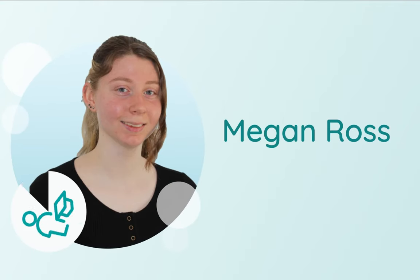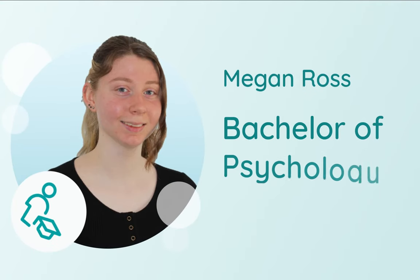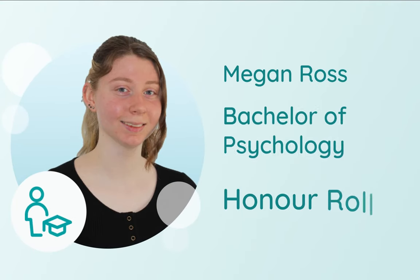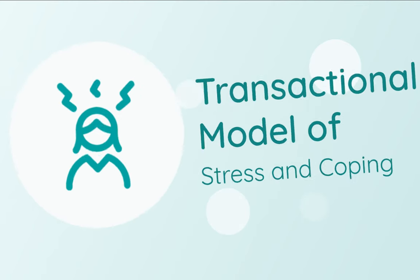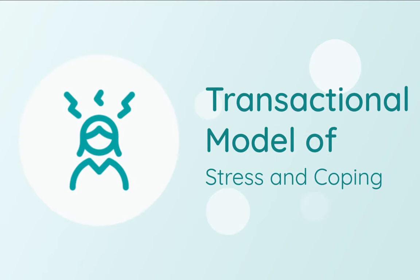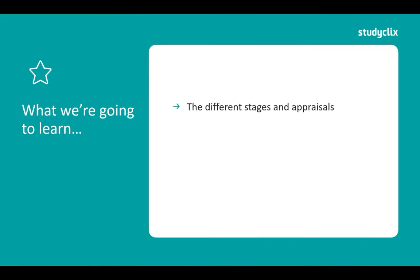My name is Megan Ross and I'm studying a Bachelor of Psychology at Monash University. I was on the VC Honours List for Psychology, and today we're going to be talking about Lazarus and Folkman's Transactional Model of Stress and Coping. In this video we're going to be talking about the different stages and appraisals which are a part of this model. We're also going to talk about a scenario to give you some context of how it applies, and we'll also go through some strengths and weaknesses of this model.